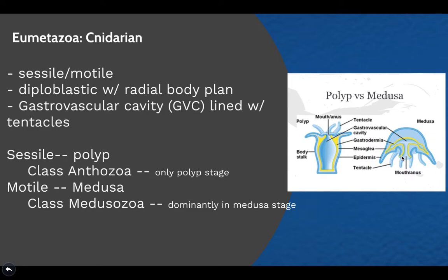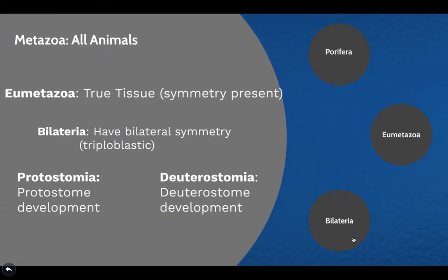The sessile polyps belong to the class Anthozoa, while the motile medusa form belongs to the class Medusazoa. Some cnidarians are able to switch between the polyp and medusa forms. The Anthozoa are cnidarians that are only present in the polyp stage, while Medusazoa predominantly live in the medusa stage. It's important to remember that some organisms can change between both forms.